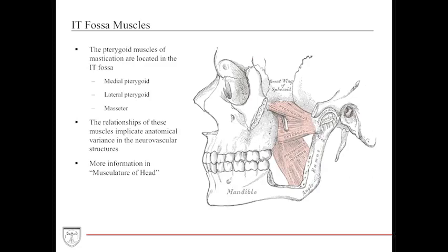The infratemporal fossa contains important muscles, including the medial and lateral pterygoid muscles, as well as the masseter muscle, which forms one of the borders of the IT fossa. These muscles have important anatomical relationships with arteries, nerves, and neurovascular structures. Their primary importance is in mastication, which will be discussed further in the musculature of head chapter.